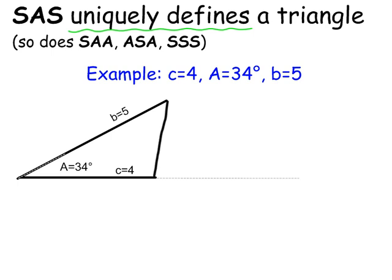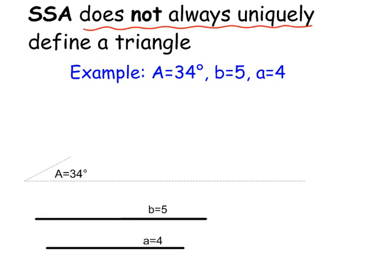Once I've satisfied those conditions, there's really no other way to complete this triangle other than to connect these two vertices. In our next lesson we'll determine how to find the remaining values, but today we're just going to explore what's called the ambiguous case, which comes up when you deal with SSA.